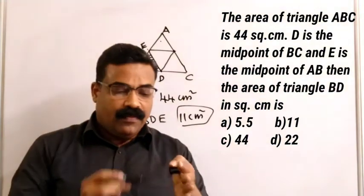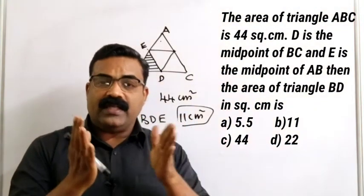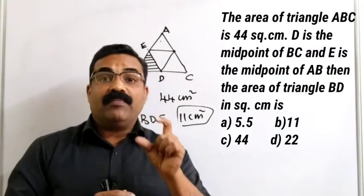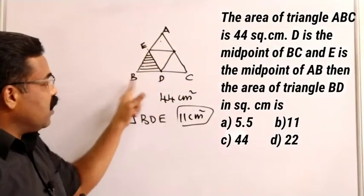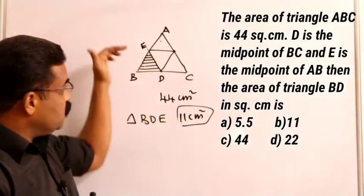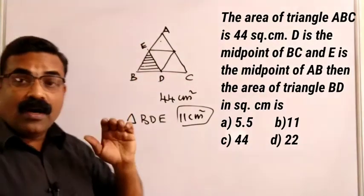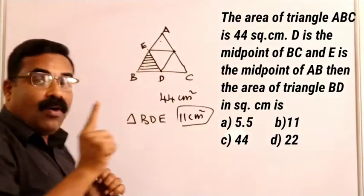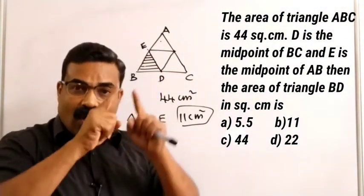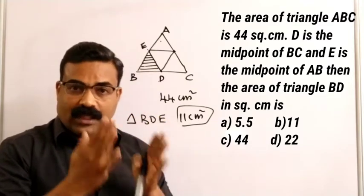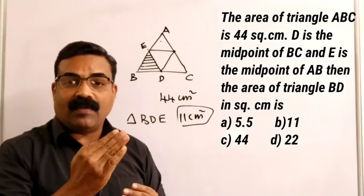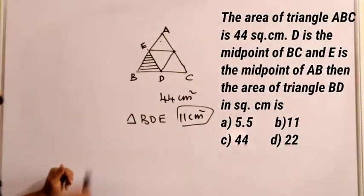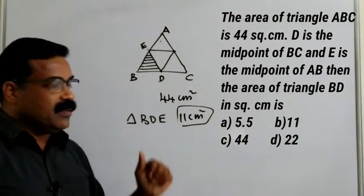The concept: whenever the midpoints of the sides are joined, the triangle formed will be one-fourth of the total area. The total area of triangle ABC is 44. When you join the midpoints of all three sides, four equal triangles are formed. So one part equals one-fourth of 44, which is 11. That is the correct answer.